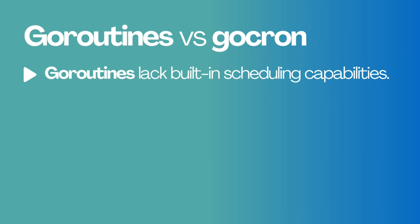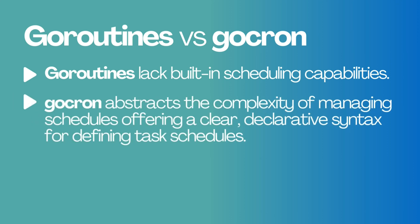For example, if you want to execute a task at a specific time or repeatedly at regular intervals, you'd need to manually manage timers, sleep durations, and error handling. GoCron abstracts away the complexity of managing these schedules. It provides a clear declarative syntax for defining when tasks should run, with logging and job management out of the box.